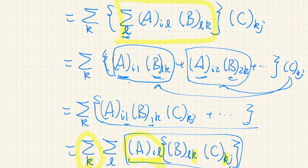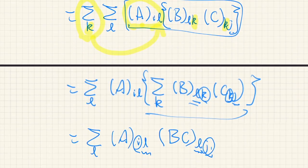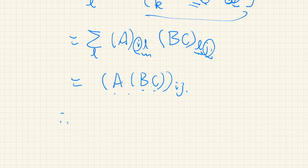Now we have L here and L here, with I and J outside. So that is the IJ element of A(BC). After all, first multiplying AB and then C from the right equals first multiplying BC and then A from the left. Therefore (AB)C equals A(BC), and we are done.